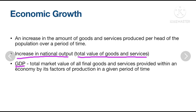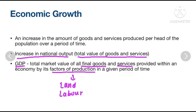GDP, which is gross domestic product, is the total market value of all final goods and services provided by an economy with its factors of production, which includes land, labor, capital, and enterprise, in a given period of time.